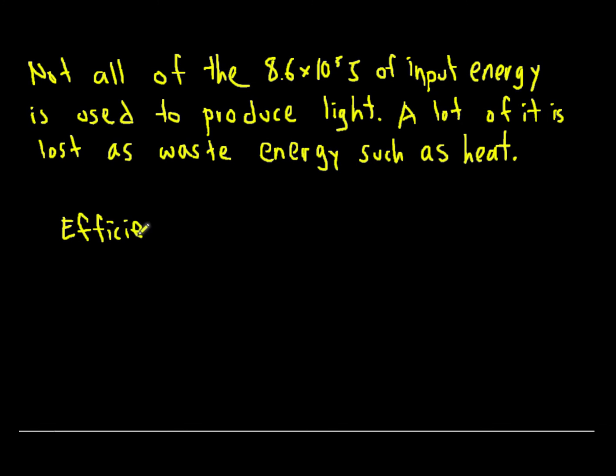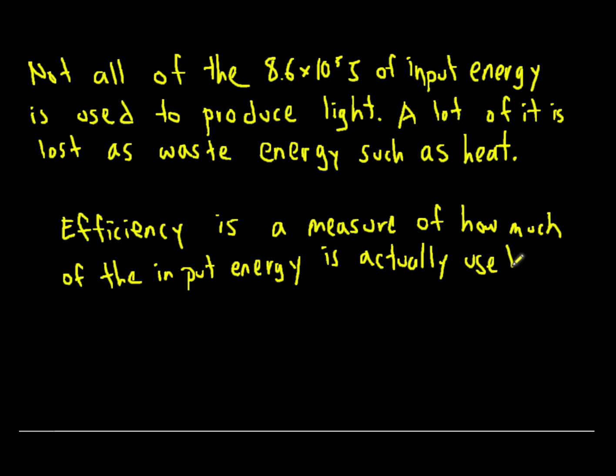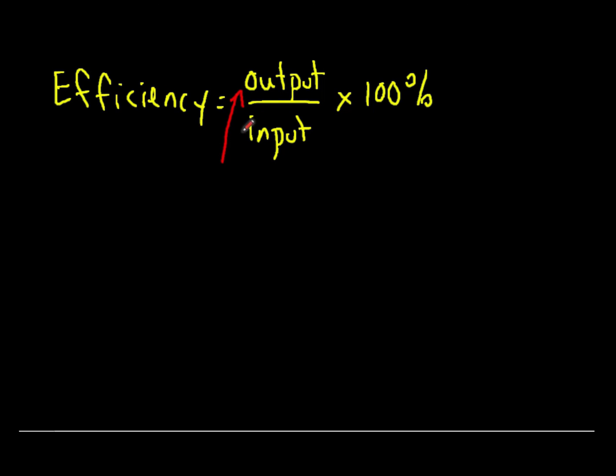The efficiency of a machine is a measure of how much of the input energy is actually used to do the machine's purpose. The formula we use for efficiency is efficiency equals output over input times 100%. The output or input could be a number of things. It could be output energy or input energy. It could be output work and input work or output power and input power.